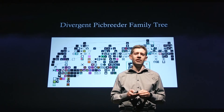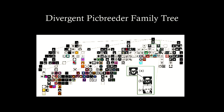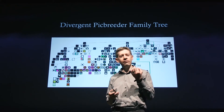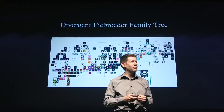We can learn a lot from a system like this. This is an actual picture of divergence. At the top of that tree — this is like a family tree — is an original product somebody evolved in Picbreeder. When you see lines, it means someone else evolved something from that. What you see here is several dozen human beings interacting with each other by branching off of each other's creations, and you can see what you're actually looking at is divergence.